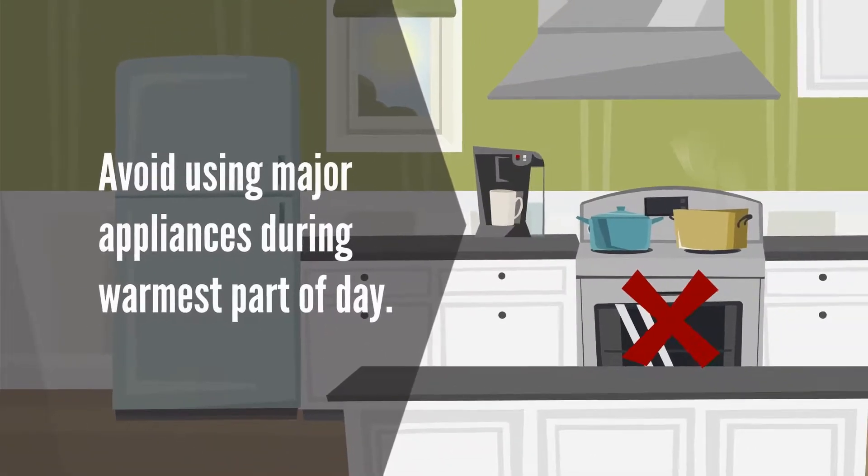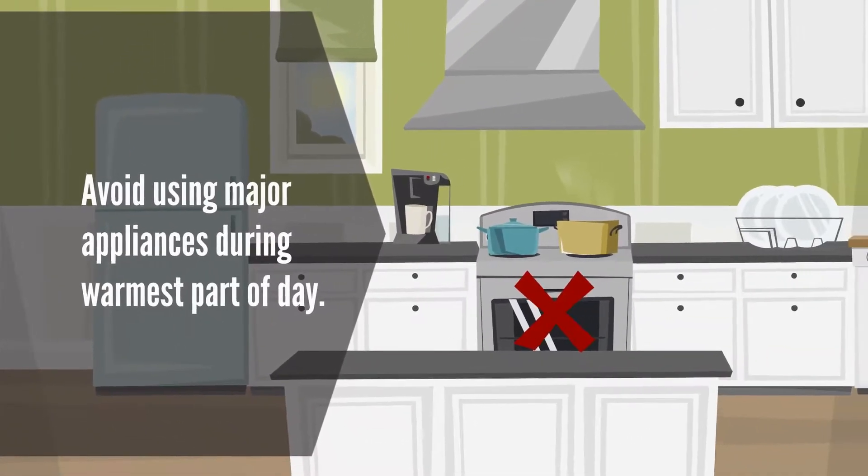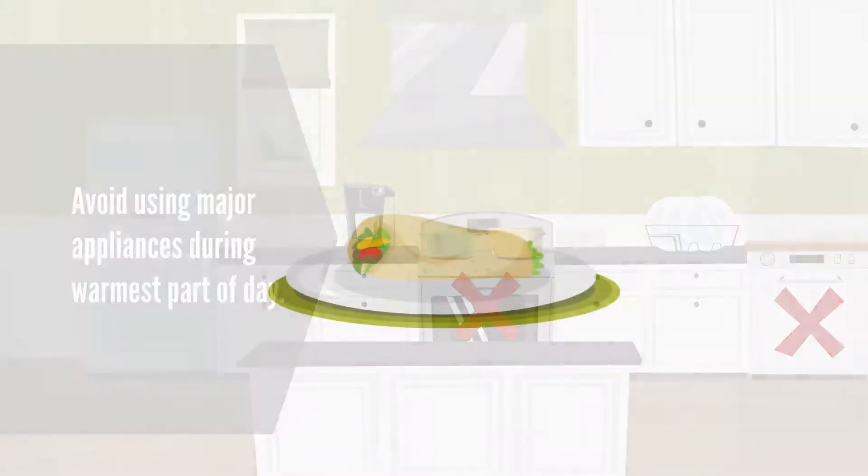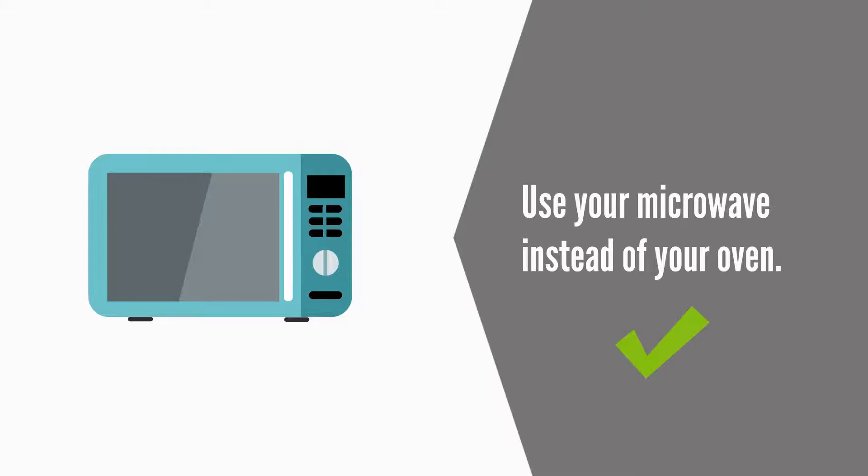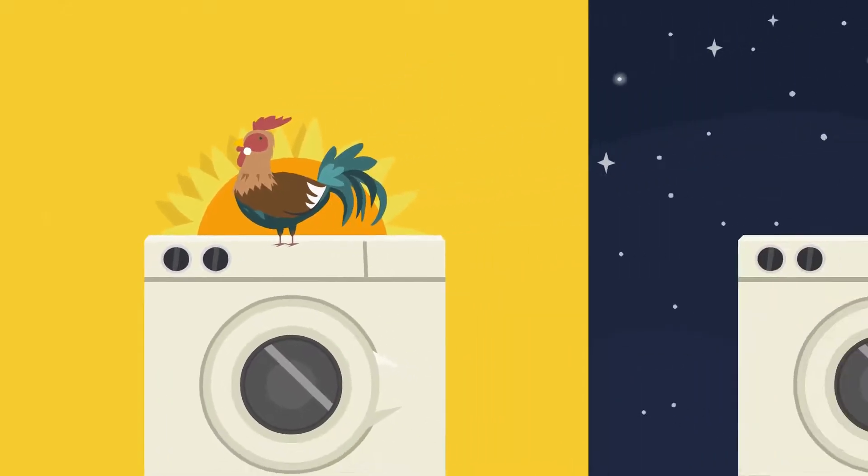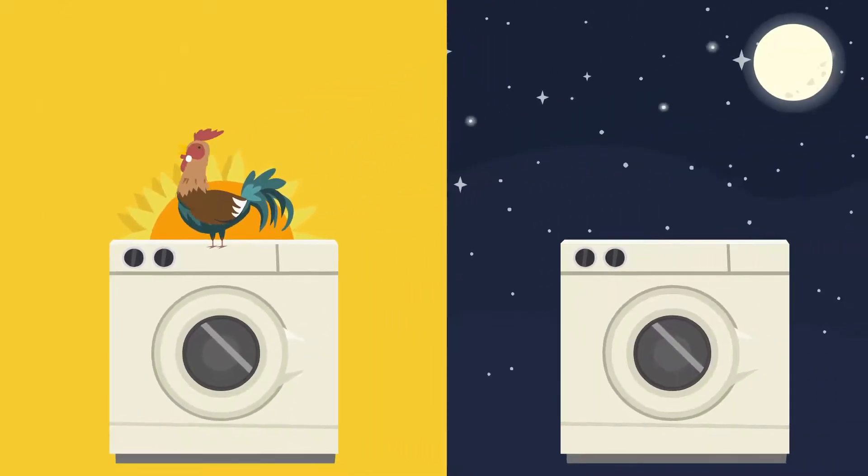avoid using major appliances that put off a lot of heat during the warmest part of the day. If cold sandwiches get boring and hot food sounds good, use a microwave instead of your oven. Also, hold off on using your dryer until the early morning or late evening.